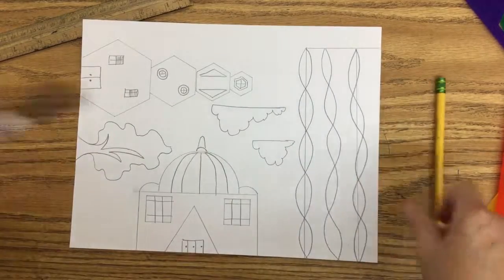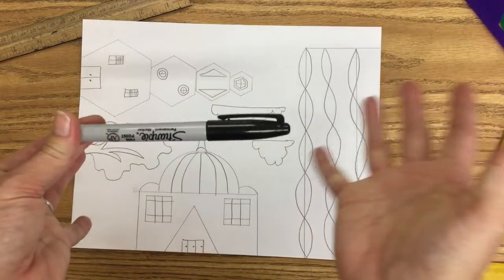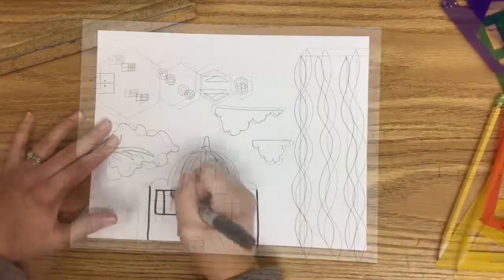As I go back through now, I want to outline these with Sharpie. You can use black Sharpie or you can use colored Sharpie if you're thinking about painting with lots of different colors.